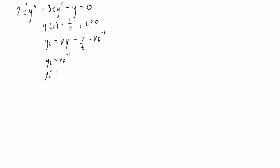With y2 = v·t⁻¹, we take the derivative using the product rule. y2' equals v'·t⁻¹ minus v·t⁻². Then we differentiate again to get y2''. Applying the product rule to each term gives v''·t⁻¹ minus v'·t⁻², minus v'·t⁻², plus 2v·t⁻³. Combining the two like middle terms gives us y2'' = v''·t⁻¹ minus 2v'·t⁻² plus 2v·t⁻³.